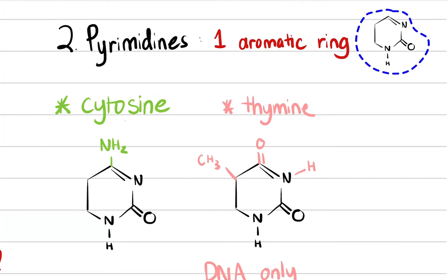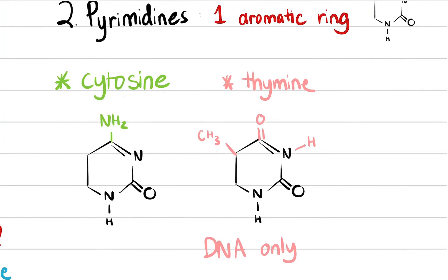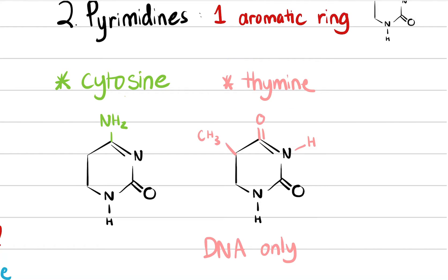If you see a molecular or chemical structure of DNA and you see one aromatic ring, it's a pyrimidine. The pyrimidine is composed of cytosine and thymine. Cytosine and thymine are very similar — it's just a couple of bases that are different between them.